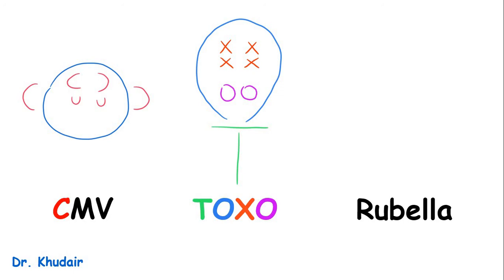Lastly, rubella is associated with patent ductus arteriosus or PDA. The mnemonic is BDA: B is for blindness, D for deafness, and A is associated with PDA.